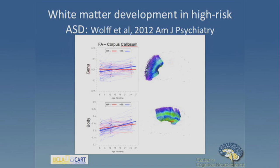I'd also like to show this study from Joe Piven's group showing differences in the trajectory of white matter development in a three- to six-month-old cohort at high risk for developing autism — this is before actually knowing that they have autism. In a high-risk-positive versus high-risk-negative comparison, you can see that even quite early in life, there's a difference in the amount of white matter in the callosum and in the trajectory of development. It's just one preliminary study and hasn't been validated yet, but it's strongly suggestive of connectivity differences very early in life.